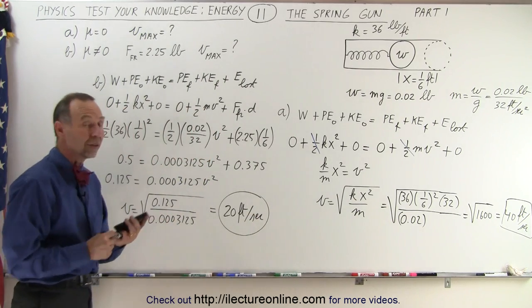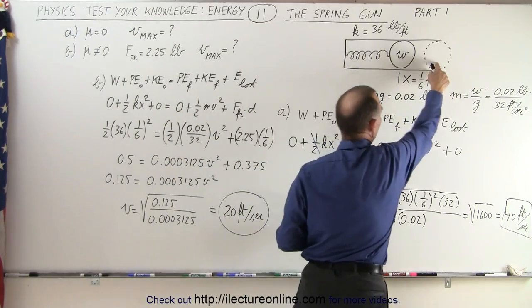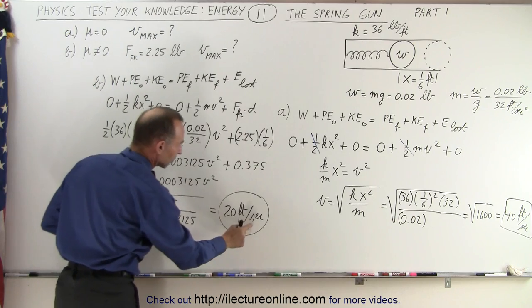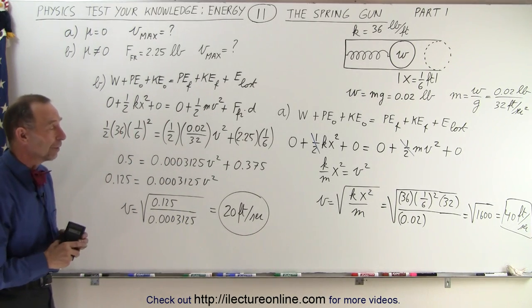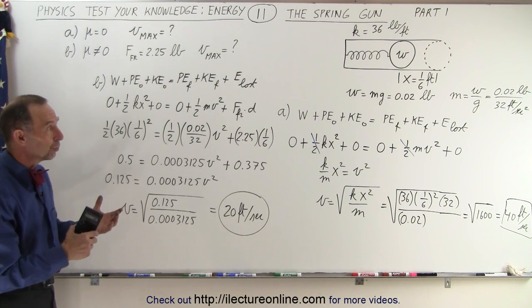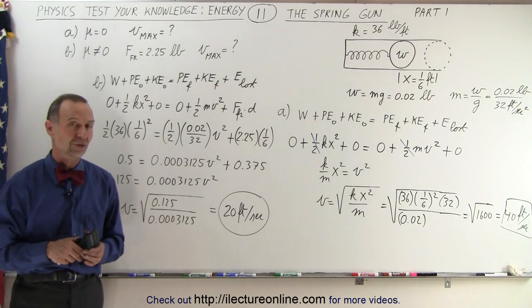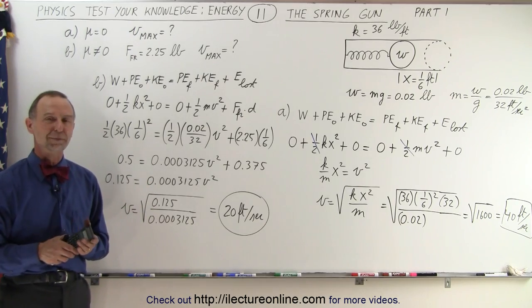So notice that with no friction, the bullet will exit the barrel at 40 feet per second. With friction, the bullet will leave the barrel at 20 feet per second, and that's how it's done. Now, you see here we have part 1, we have a part 2, which makes it a little bit more challenging. So let's come back and do some additional questions, or challenging questions, on this particular problem.